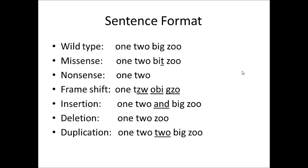Let's take a look at some code in sentence format, which is easier to make sense of. We're looking at the wild type — the perfect sentence with no mutations. The sentence reads: one, two, big, zoo. That's our perfect DNA sentence. Notice how these are all three-letter words, just like our DNA code is written in three-letter codons.